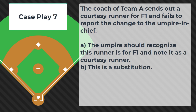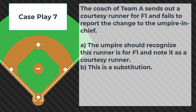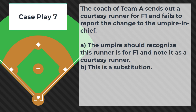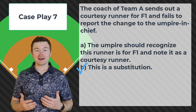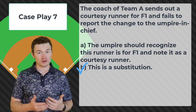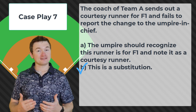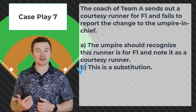Case play number seven: the coach of team A sends out a courtesy runner for F1 and fails to report the change to the umpire in chief. Is this: A — the umpire should recognize this runner is for F1 and note it as a courtesy runner, or B — this is a substitution? The correct answer is B, this is a substitution. We cannot have an unannounced courtesy runner under NFHS rules, but we can have an unannounced substitution. If it's not reported to the umpire as a courtesy runner, it is by default an unannounced substitution.